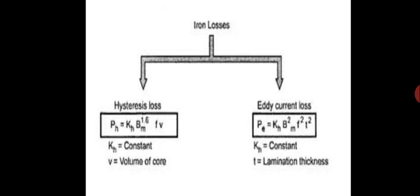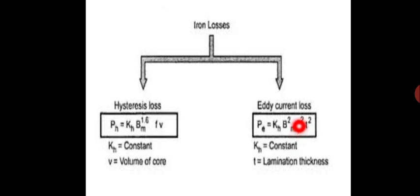So once if you increase the harmonics, the frequency will increase. Once the frequency increases, the hysteresis loss will increase. But more severely affected is the eddy current loss, because it is proportional to the square of the frequency. For example, the fundamental is 50 Hz; the third harmonic is 3 × 50 = 150 Hz. The eddy current loss factor becomes 3² = 9 times compared to the fundamental.